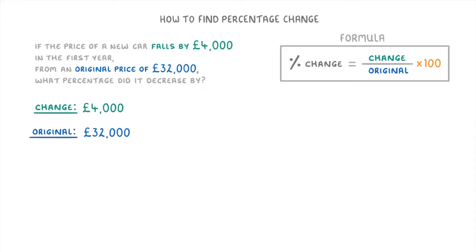So for our calculation, all we do is our change of £4,000, divided by the original of £32,000, times 100, to get a percentage change of 12.5%.